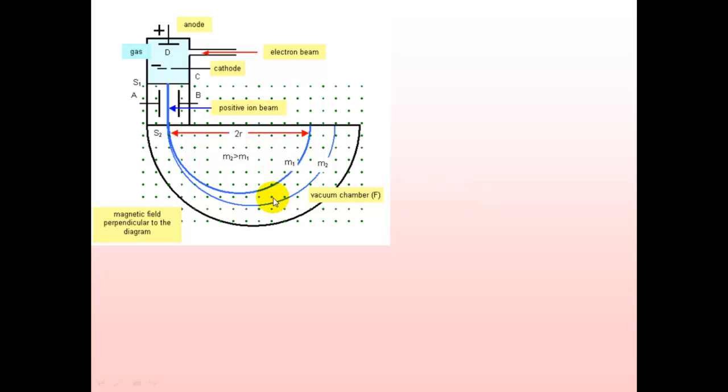And here we have the same diagram again and you should be able to equate some equations that describe this. The first one is the kinetic energy which is given by the potential difference between the cathode and the anode. That's going to be a large potential difference. So the eV is equal to half mV squared.